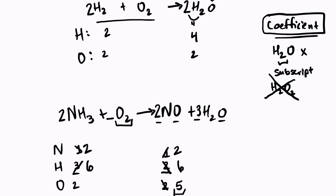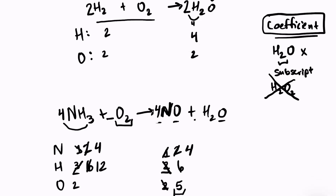So let's change this to a 4 and this to a 4. Now I have 12 hydrogens, which means I need to put a 6 here. This will change to 12. And now I have 4 plus 6 oxygens — I have 10 — which means my coefficient here will be a 5. We can double-check to make sure everything is balanced: 4, 4, 4, 12, 12, 10, and 10. It is balanced.